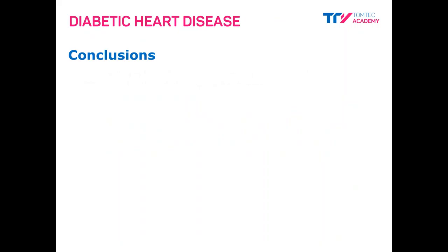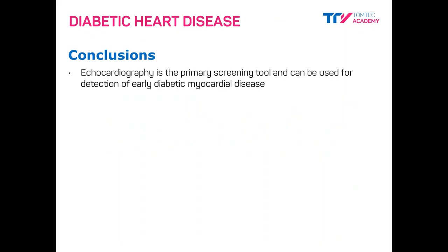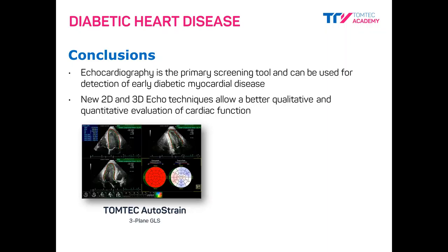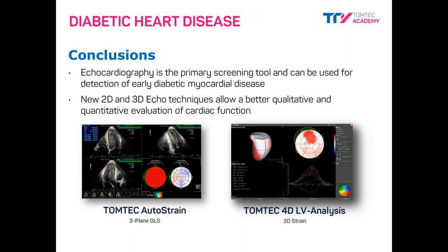In conclusion, echocardiography is an excellent tool to detect early diabetic myocardial disease. These new 2D and 3D echo techniques — especially strain — allow much better qualitative and quantitative evaluation of cardiac function. With our AutoStrain tools, this can be done completely automatically based on 2D echo in three planes, or on a single plane if only one view is available. With a 3D echo dataset, we recommend using the three-dimensional LV analysis for a full 3D assessment.